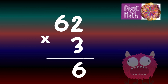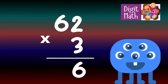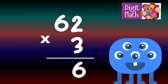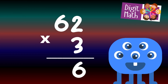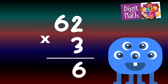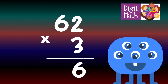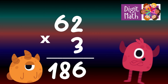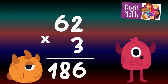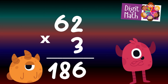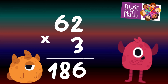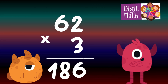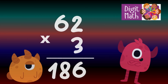In the Tens column, multiply 8 by 4, which equals 32. Add the carried over 6 to 32, making 38. Place 38 in the Tens and Hundreds column. So the final result is 48 times 8 equals 384.